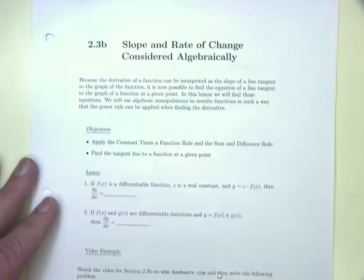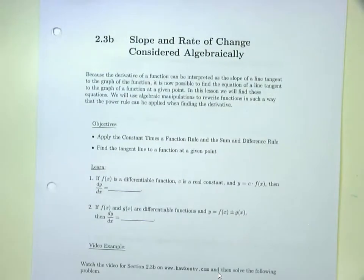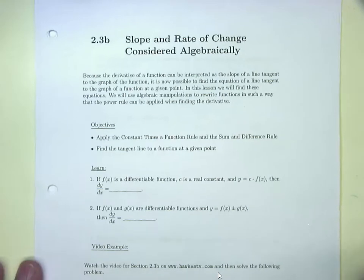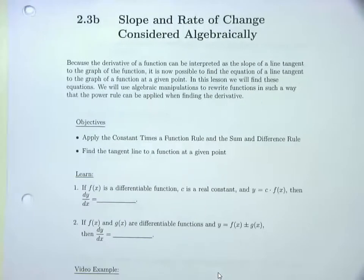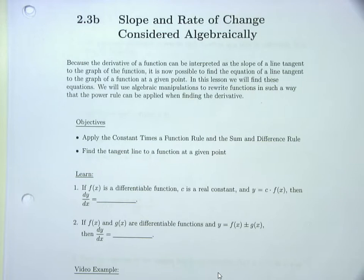Now we get into section 2.3: slope, rate of change, and using algebra before differentiating. Since the derivative gives the slope of the tangent line, we can find the equation of a tangent line at a given point. A key theme of this section: clean up the algebra first, then take your derivative. That's what this section is all about.